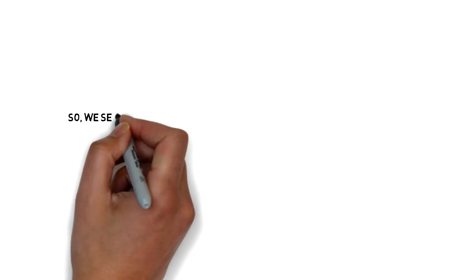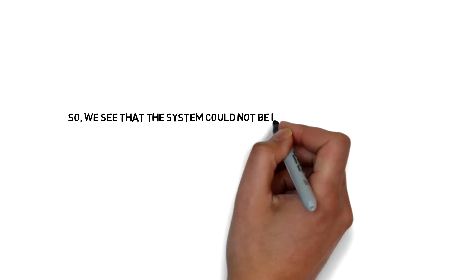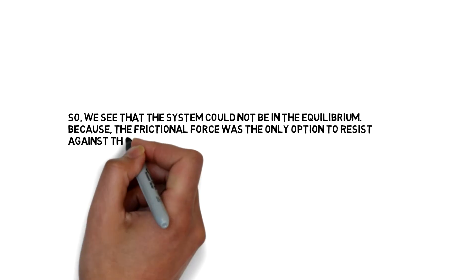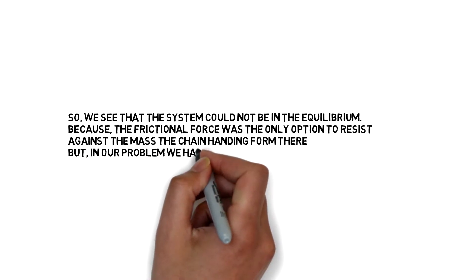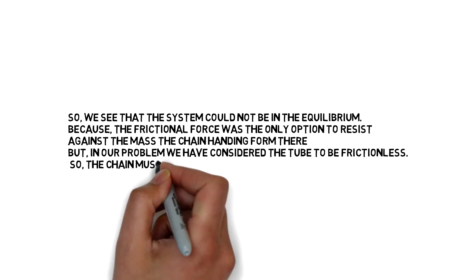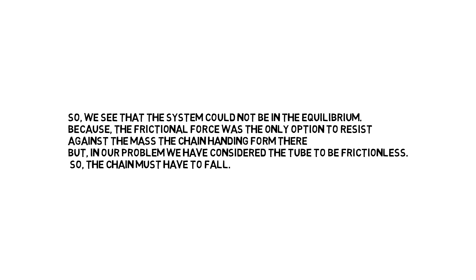So we see that the system could not be in equilibrium because the frictional force might be the only option to resist against the mass of the chain hanging from there. But in our problem we have considered the tube to be frictionless, so the chain must have to fall.